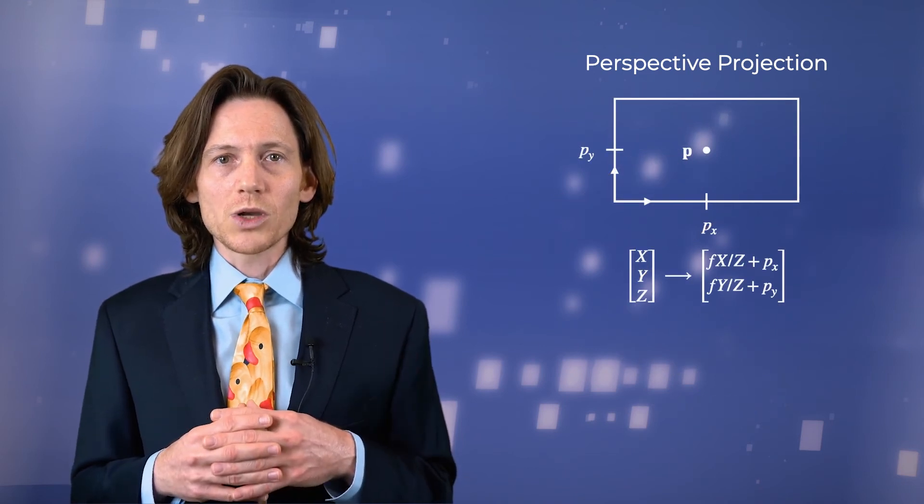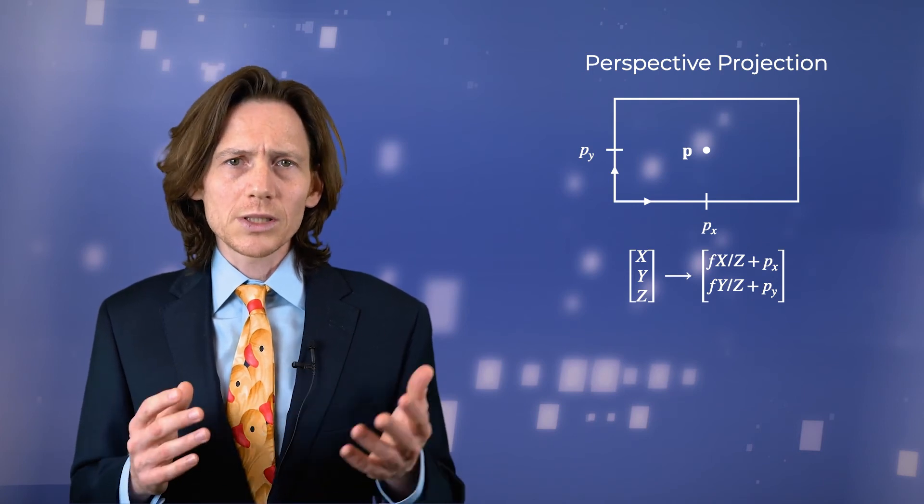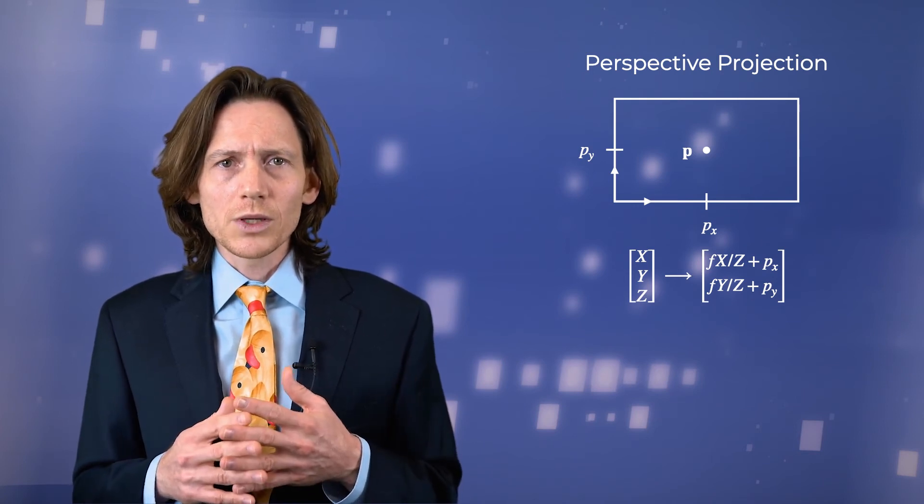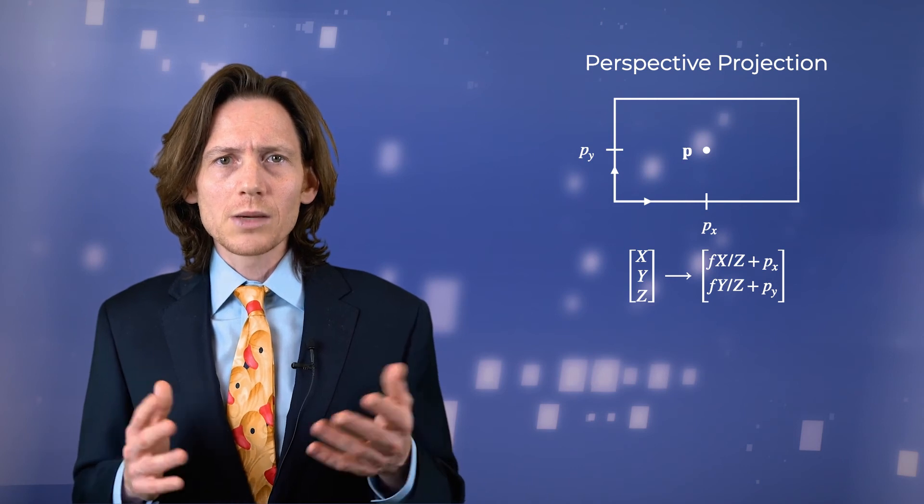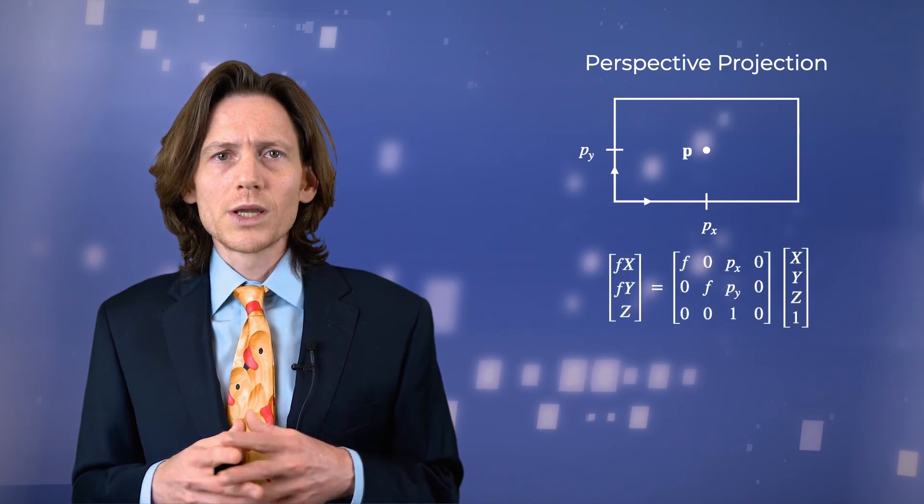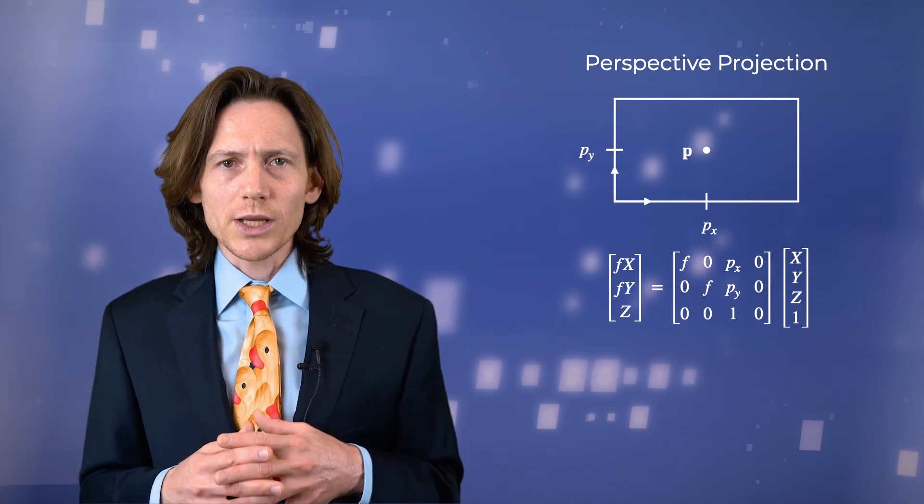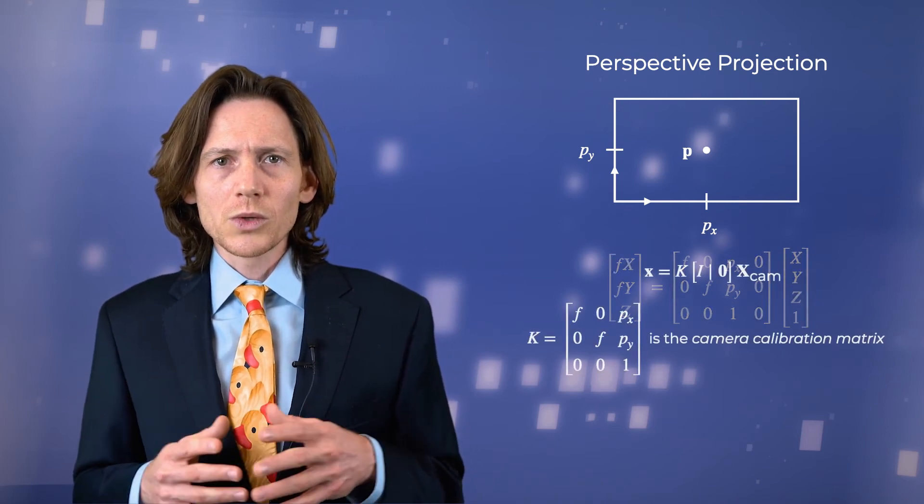Thus far, we have assumed that the principal point was the origin of the image coordinate frame. However, the origin is typically located elsewhere on the image plane. We can update our model to accommodate this by translating the coordinates of the principal point.